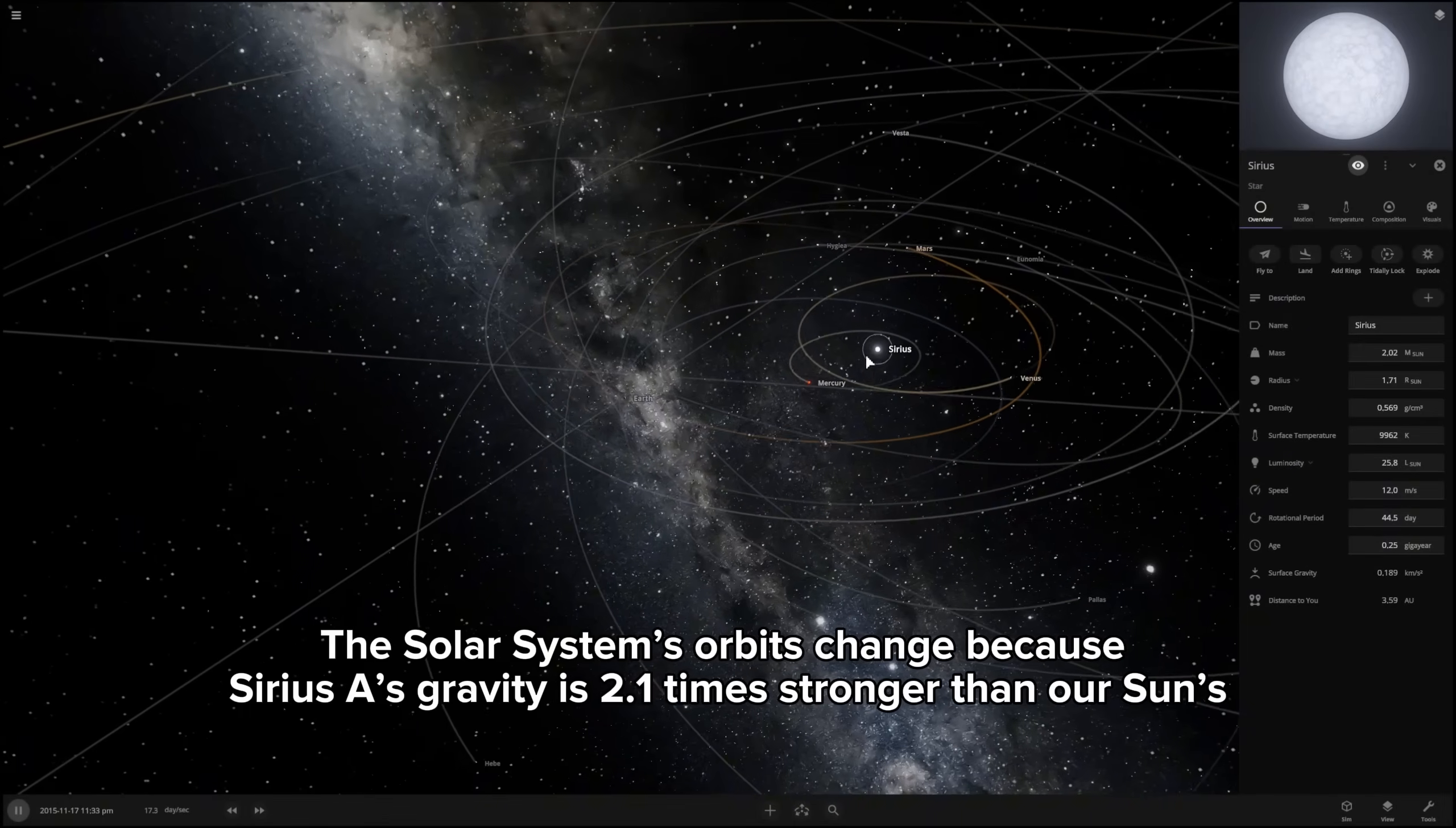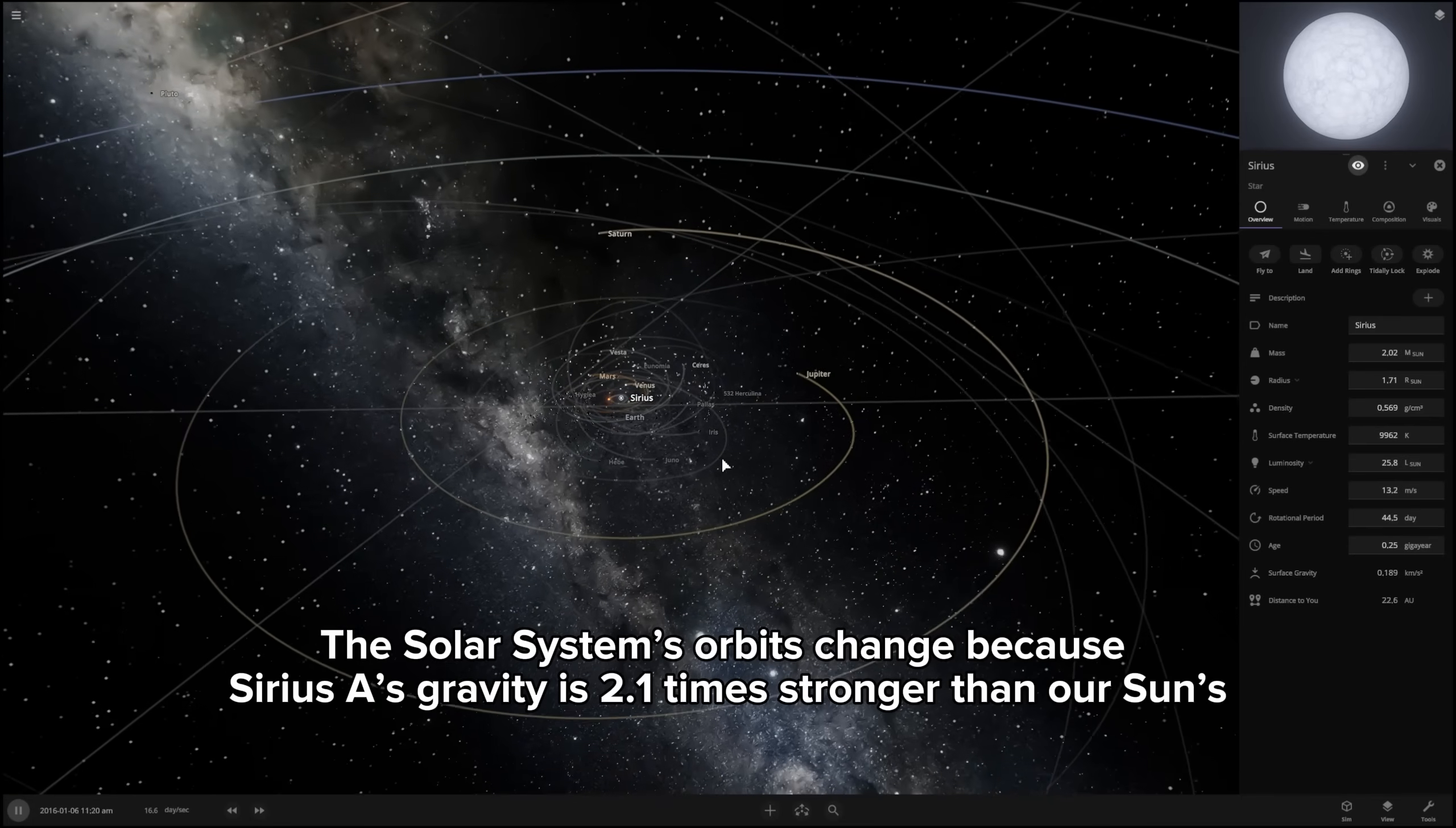The solar system's orbits change because Sirius A's gravity is 2.1 times stronger than our sun's.